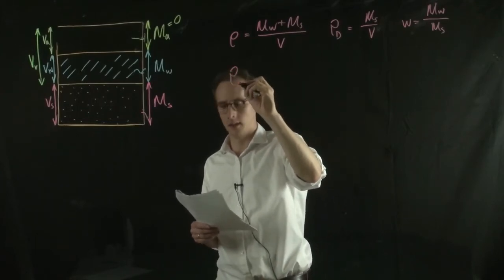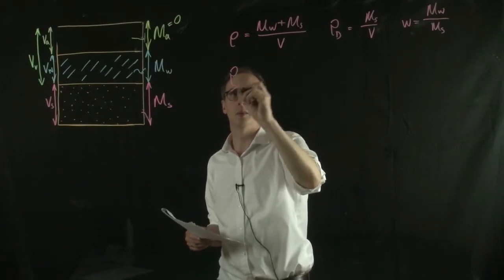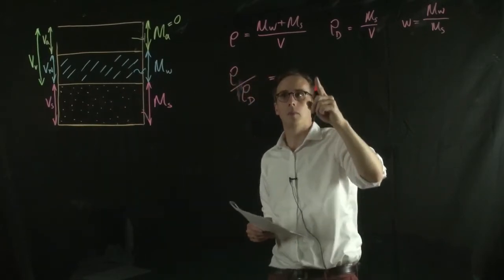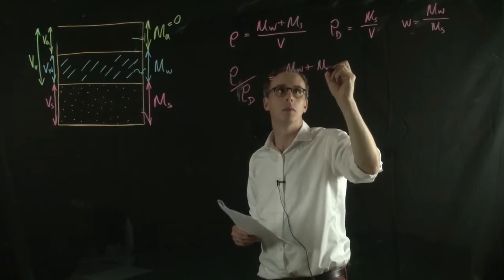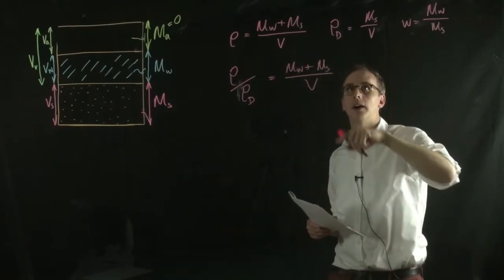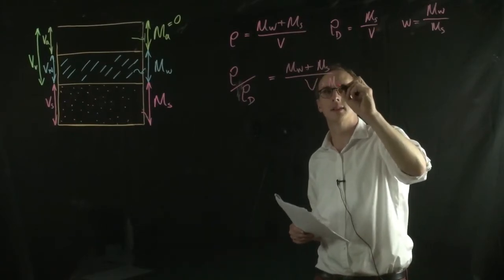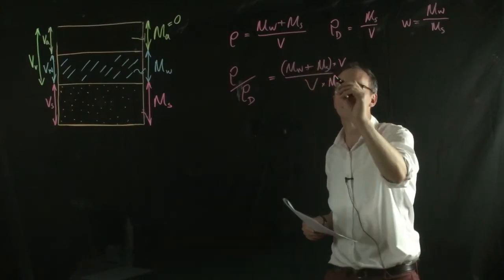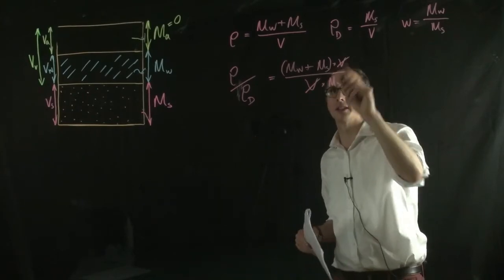So what this looks like is, if I take the bulk density, and we divide it by the dry density, that equals the bulk density, divided by the total volume. So that's the bulk density. And divided by the dry density, we just multiply the bottom here by ms, and multiply the top by V.